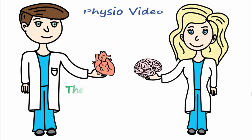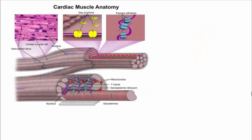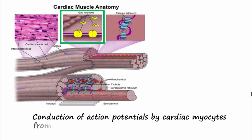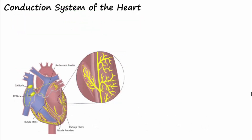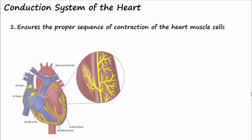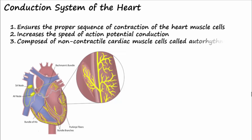The topic today is the heart conduction system. Cardiac myocytes are able to propagate action potentials from cell to cell through gap junctions of the intercalated discs, but this process is quite slow and can't account for the ordered synchronous contractions of the heart. To ensure the proper sequence of contraction and to increase the speed of action potential propagation, the heart is equipped with a specialized conduction system composed of non-contractile cardiac muscle cells that specifically function to conduct action potentials.